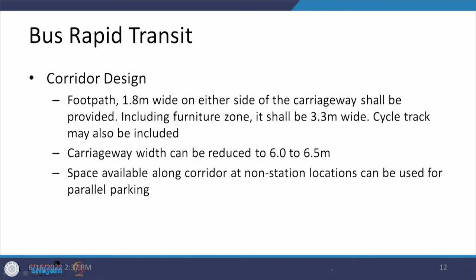To the extreme sides of those cross sections, after the lanes for motorized vehicles, footpaths should be at least 1.8 meters wide. When a furniture or multifunctional zone is present, that should be 3.3 meters wide. If cyclists are present, cycle tracks can be incorporated into the cross section, and carriage way widths used for motorized vehicles can be 6 to 6.5 meters instead of 7 to 7.5 meters.